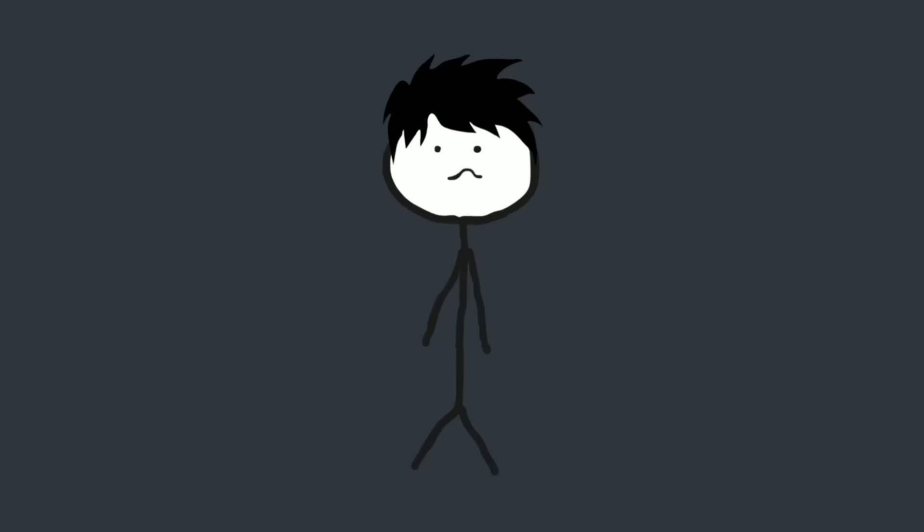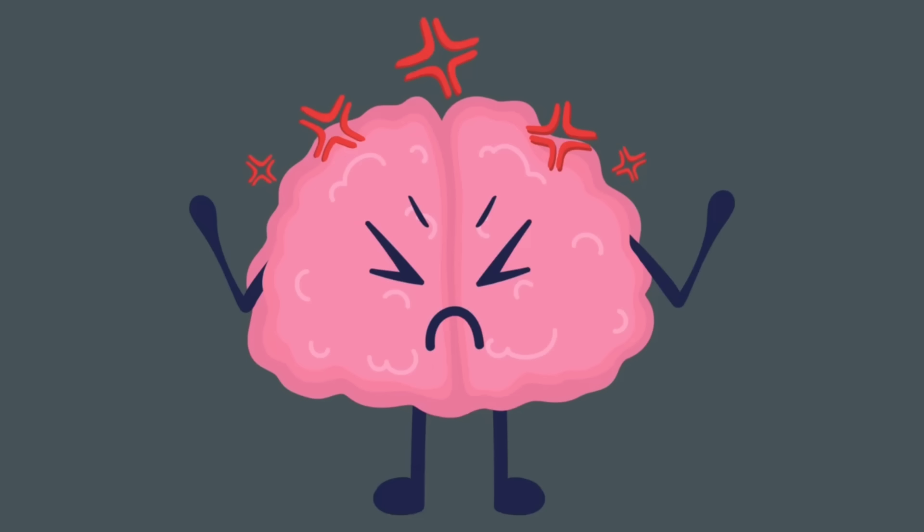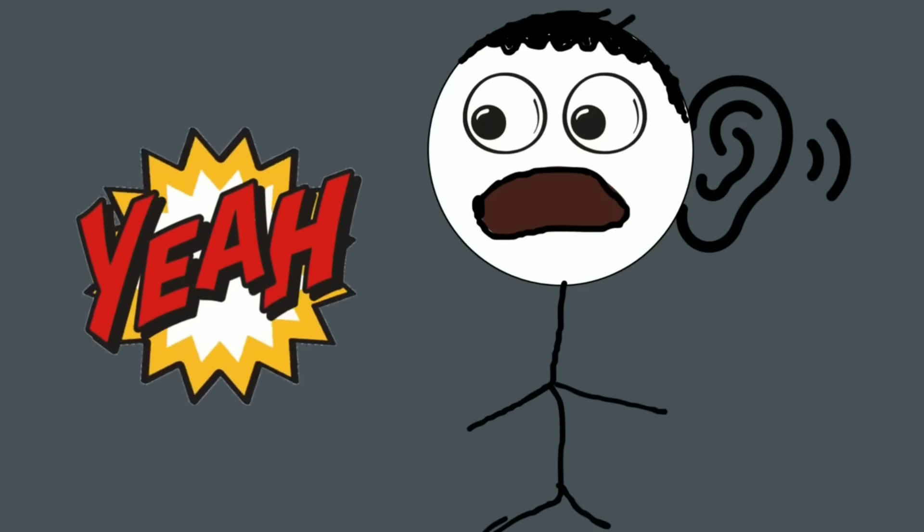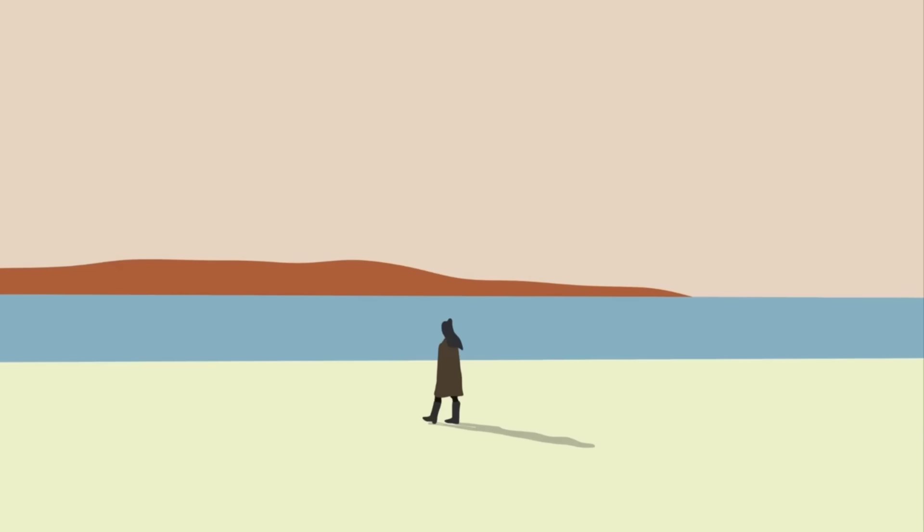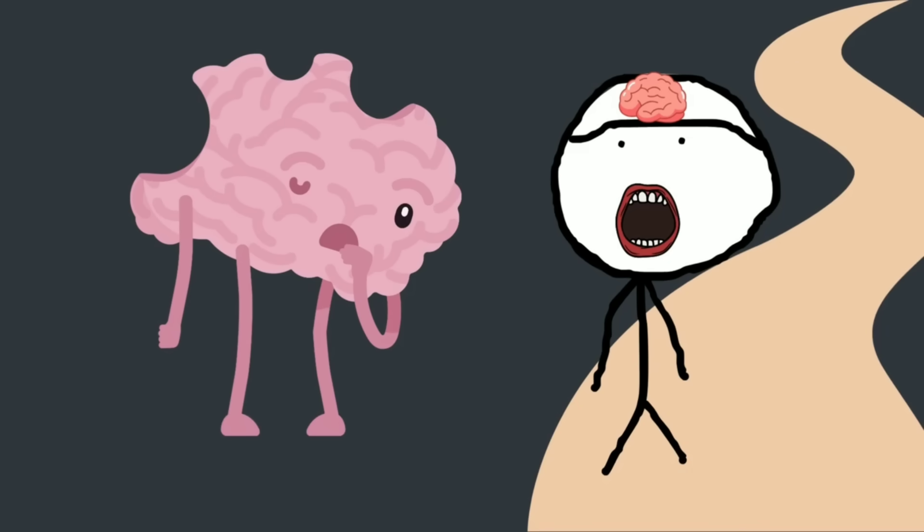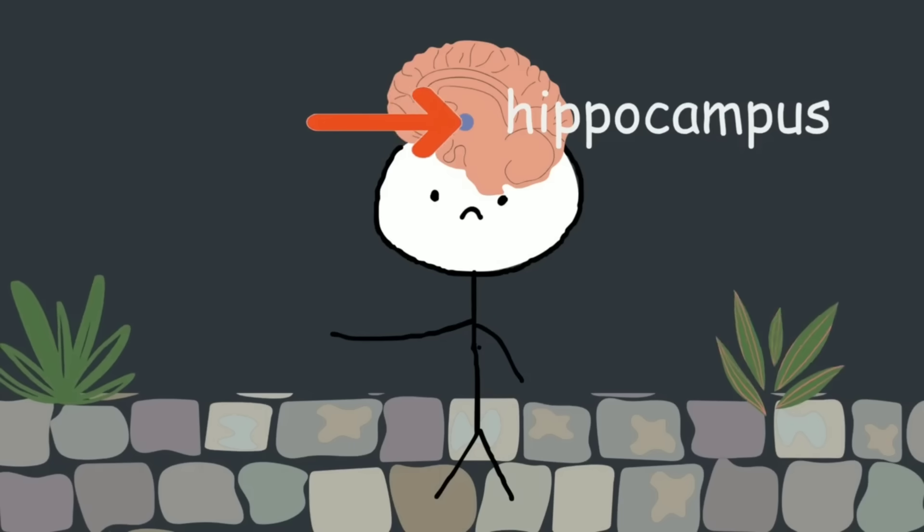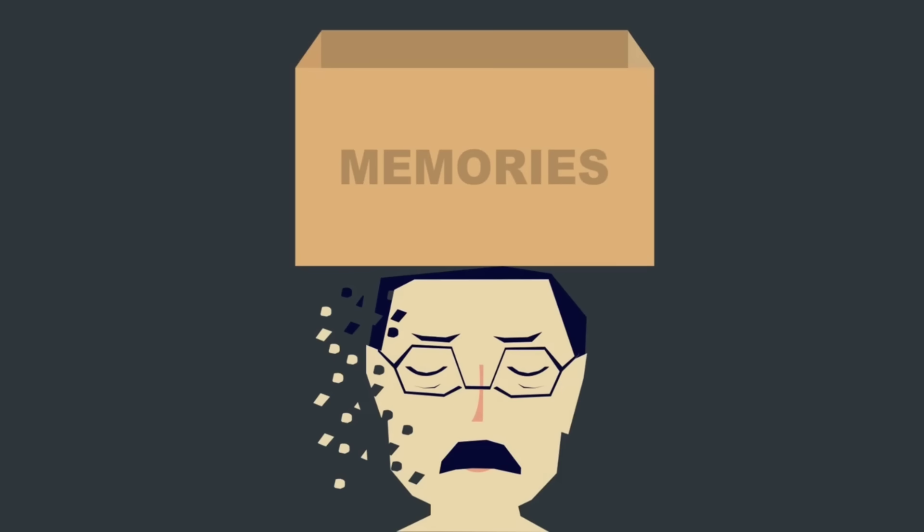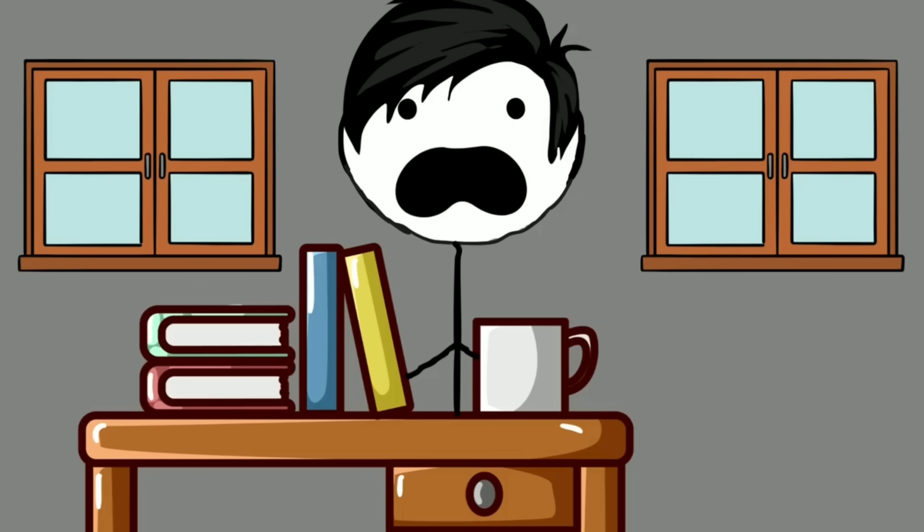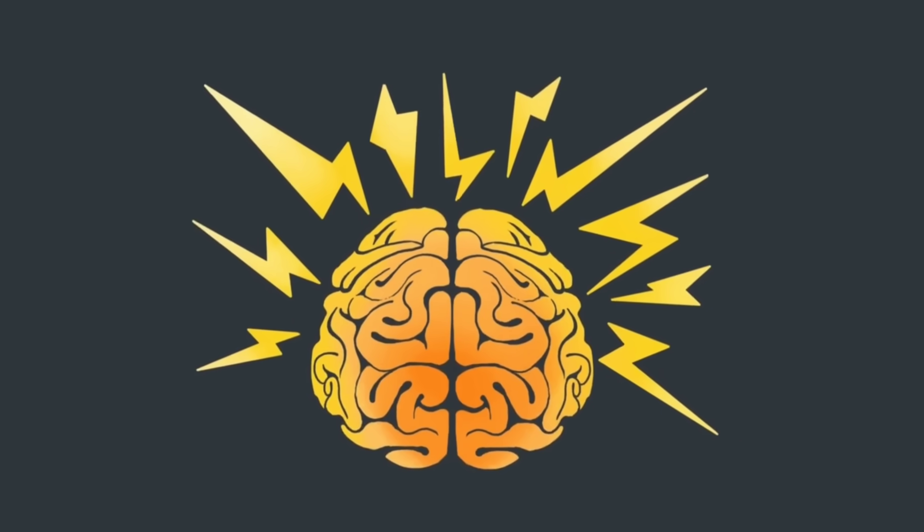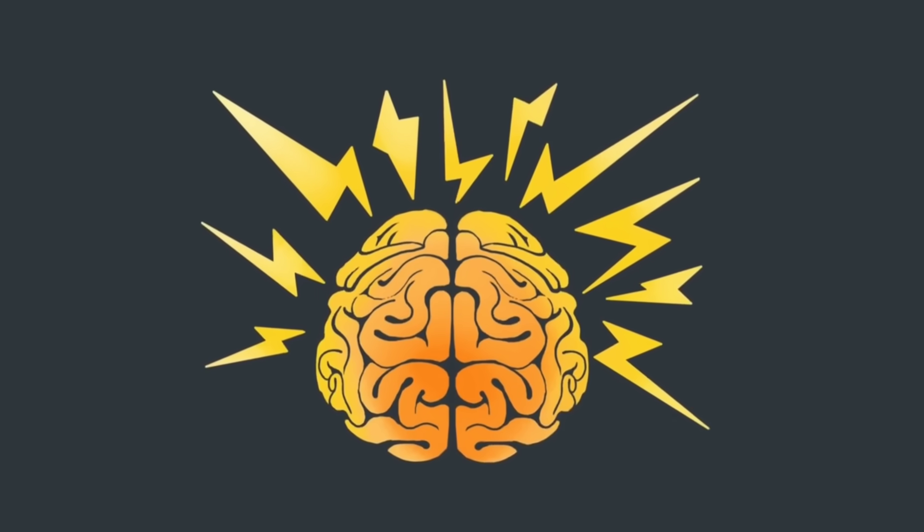Number three. Loneliness literally shrinks parts of your brain. Yeah, you heard that right. Chronic loneliness can physically change the structure of your brain, and not in a good way. One of the first areas affected is the hippocampus, the region responsible for memory, emotional regulation, and learning. In long-term loneliness, this part of the brain actually shrinks.